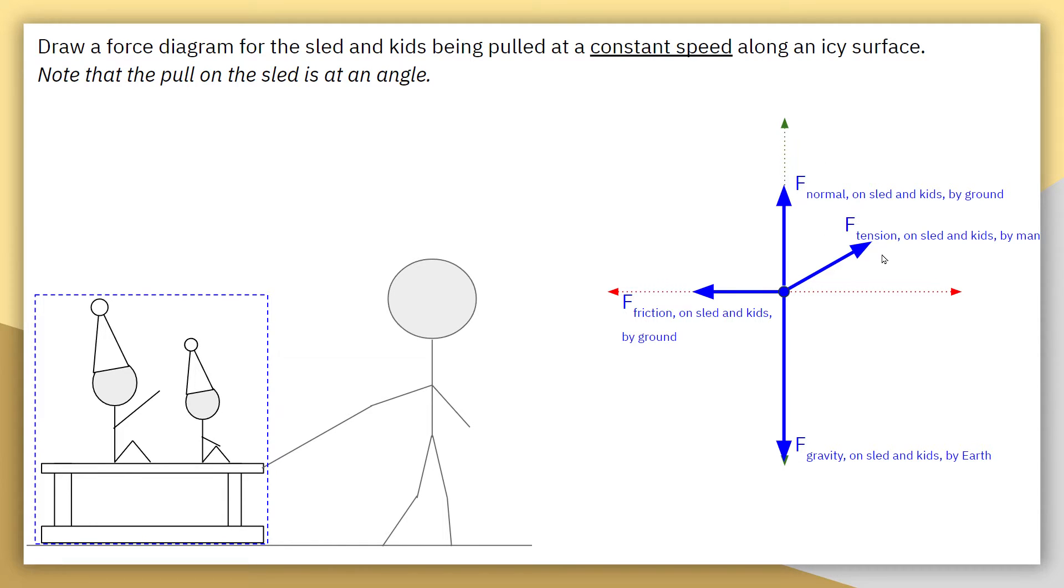So, the fact that we have some amount of force tension upwards means that the ground did not need to be pushing up as hard on the sled on the kids, as it would be if this force tension were directly to the right.